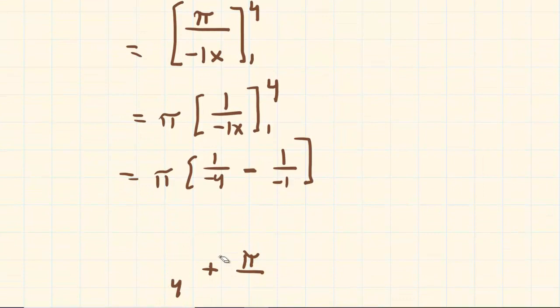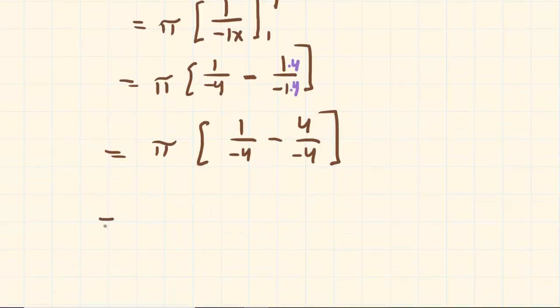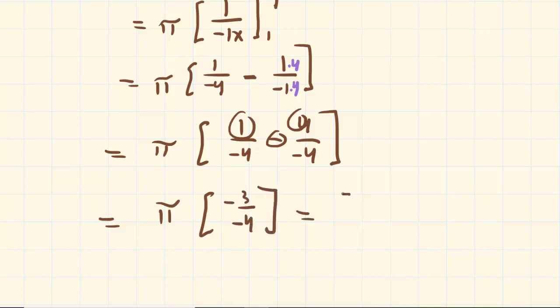Why don't we establish a common denominator here. We can multiply this by four, so now we have pi times one over negative four minus four over negative four. Now that we have a common denominator, we can subtract the numerators, so one minus four gives us negative three over negative four. The negatives cancel, we're left with positive three-fourths pi as the answer.